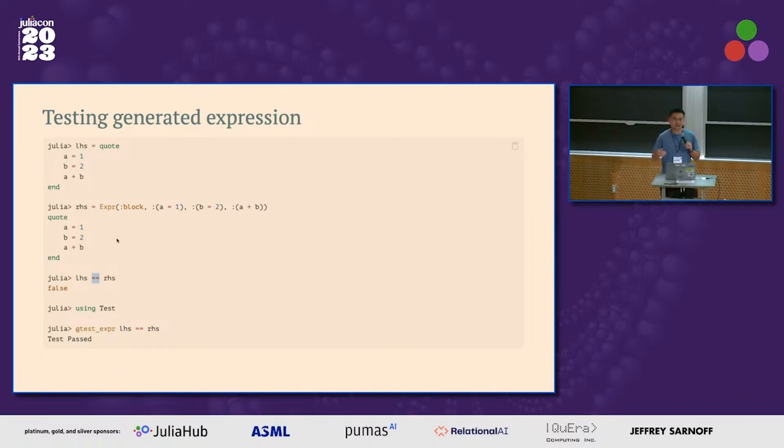What we actually want to test is if they are semantically equivalent. So we provide you a macro that checks this by matching a bunch of patterns we think semantically equivalent in Julia, like we will ignore line number nodes. So you can just use this macro to test if your generated expression is equivalent to what you expect, up to ignoring some line numbers.